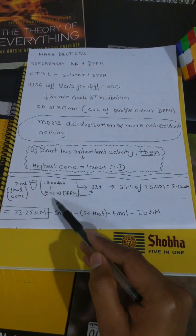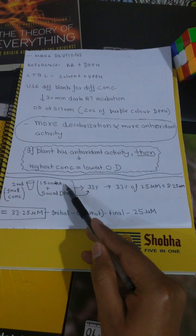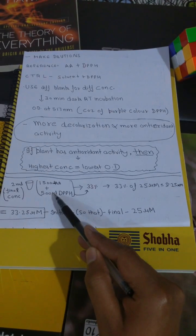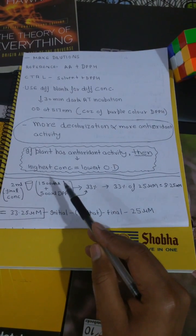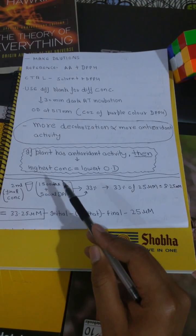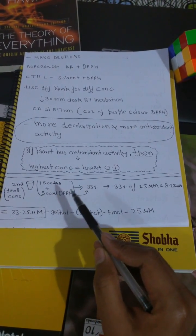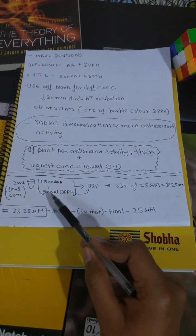That means we need to put more than 25 micromolar so that even after getting diluted it comes out to be 25 micromolar. So how much extra concentration we need to put, I'm going to tell you about that. First of all, find out what is 500 microliter in reference to 1500 microliter in terms of percentage.